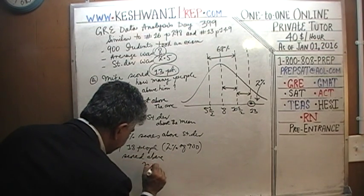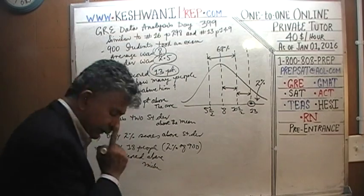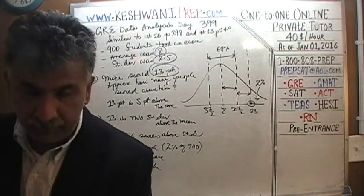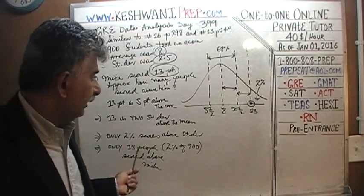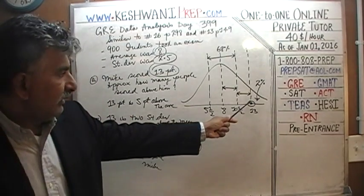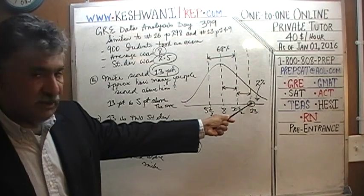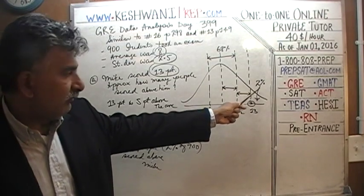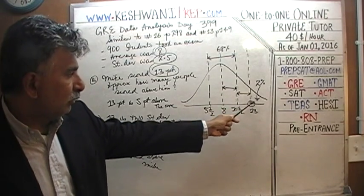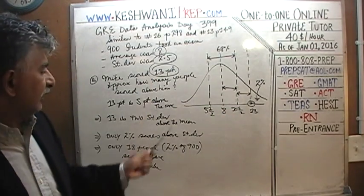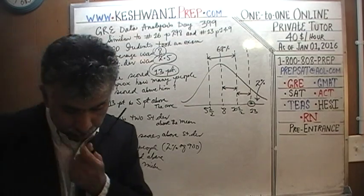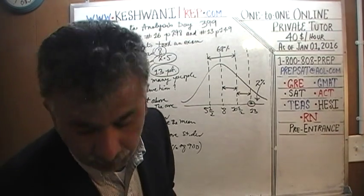We didn't have to make a fuss about it. As soon as we see that 13 is two standard deviations above the mean, we know only 2% fall above. Two percent of 900 is 18. It should take no more than two seconds.